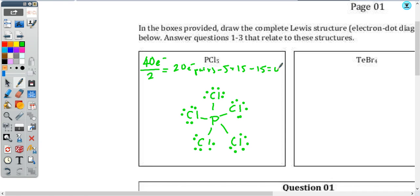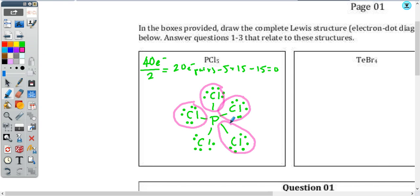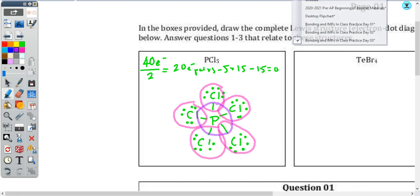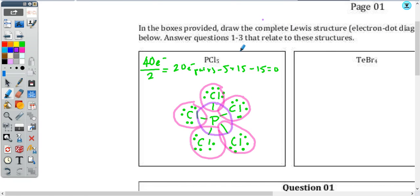Once I've used up all of my pairs, I check my structure. My chlorines each have an octet — a complete valence level — which is great. I'm a little concerned about phosphorus because phosphorus has more than an octet. But remember, I'm just going to look at my periodic table and confirm that phosphorus is in the third period or below. If it is, then it has access to the d orbitals and an expanded octet is possible. So PCl₅ — awesome.